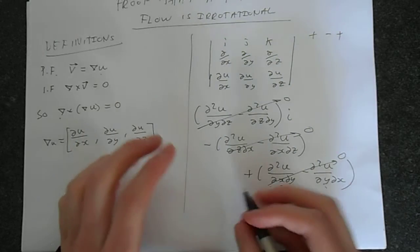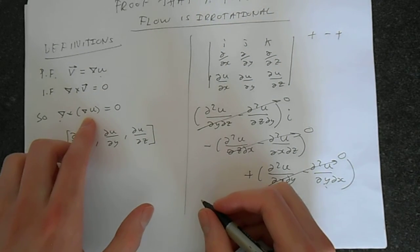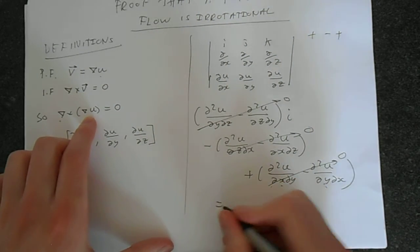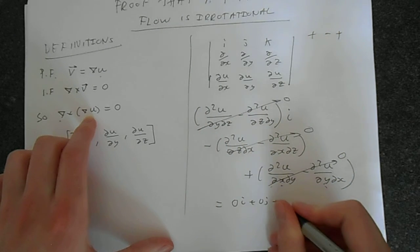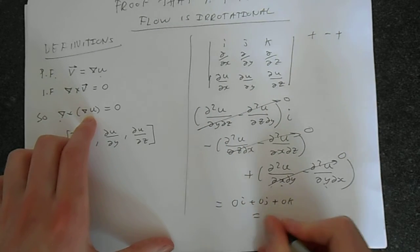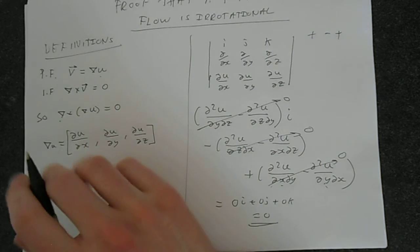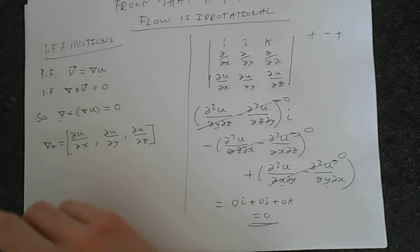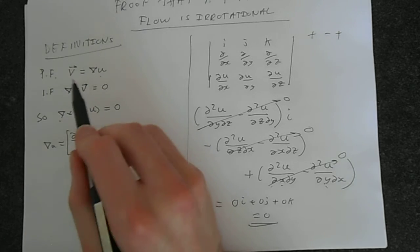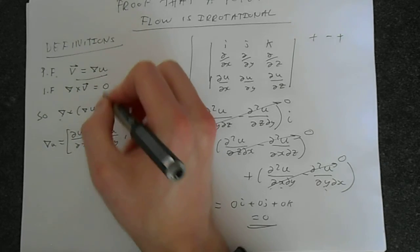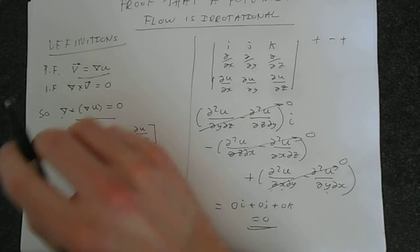So essentially, the curl of this, delta u delta y, simply equals 0i plus 0j plus 0k. So that's 0. So therefore, it is irrotational. It fits the definition of being irrotational. And if it is a potential function, this must be true. Therefore, this must be true because of this proof.